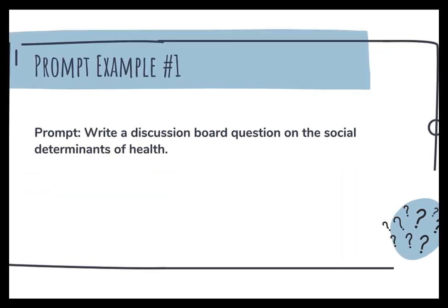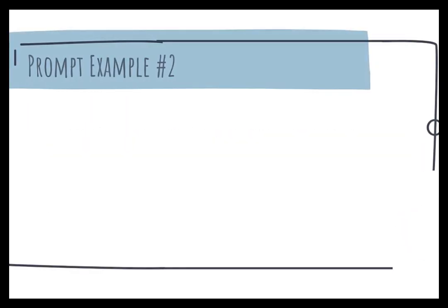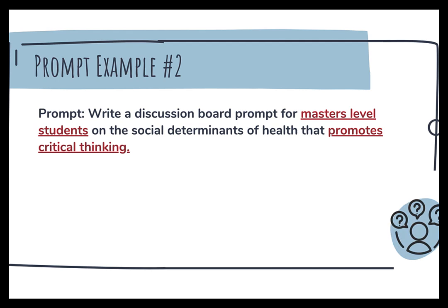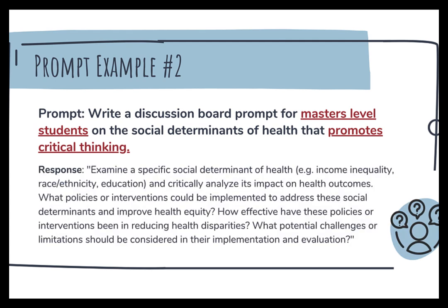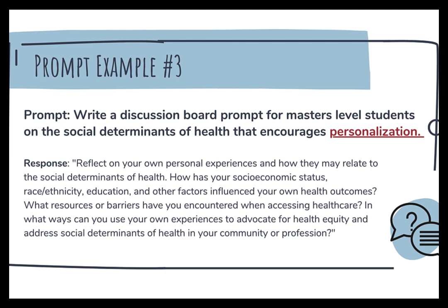For example, here is one prompt: 'Write a discussion board on the social determinants of health.' When I asked ChatGPT, I got back a very simple discussion board prompt. But when I added more information — such as specifying master's level students and promoting critical thinking — I got a more detailed prompt with questions that actually promote critical thinking. In a further prompt, I added information about personalization, and ChatGPT's response now includes reflecting on personal experiences and tying content to those personal connections.